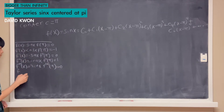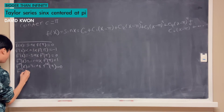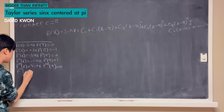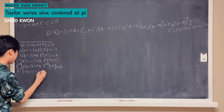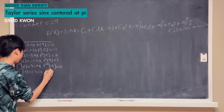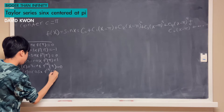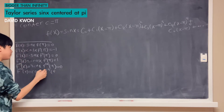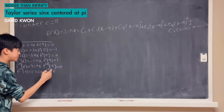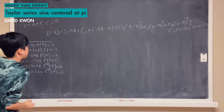Then we differentiate sin x, so f⁽⁵⁾(x) equals cos x, and f⁽⁵⁾(π) equals negative 1.